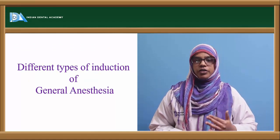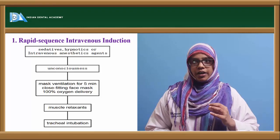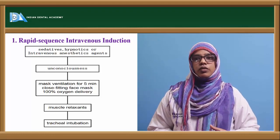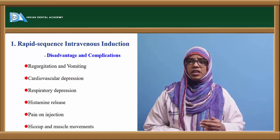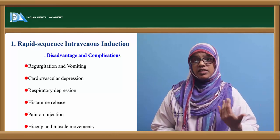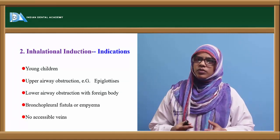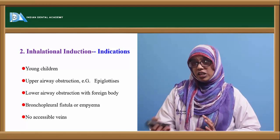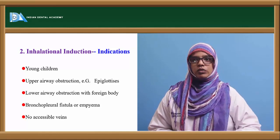There are different types of induction for general anesthesia. The first is rapid intravenous induction, where a hypnotic or intravenous anesthetic agent is used — the patient becomes unconscious, followed by face mask ventilation for five minutes with 100% oxygen using a close-fit face mask, then a muscle relaxant is given, and tracheal intubation is performed. Disadvantages include regurgitation and vomiting, cardiovascular depression, respiratory depression, histamine release, pain on injection, hiccups, and muscle movement. The second is inhalation induction, used in young children, cases of upper airway obstruction such as epiglottitis, lower airway obstruction due to a foreign body, bronchopleural fistula, or when veins are inaccessible for IV induction.